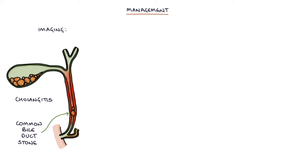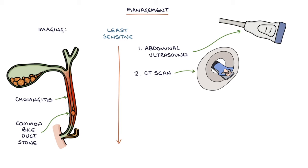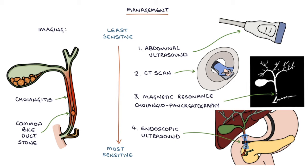When imaging is needed to diagnose a common bile duct stone and cholangitis, you can start with an abdominal ultrasound scan, which will be the least sensitive investigation. After that, a CT scan is more sensitive than an ultrasound. A magnetic resonance cholangiopancreatography or MRCP scan is more sensitive than that, and the most sensitive investigation is an endoscopic ultrasound scan.